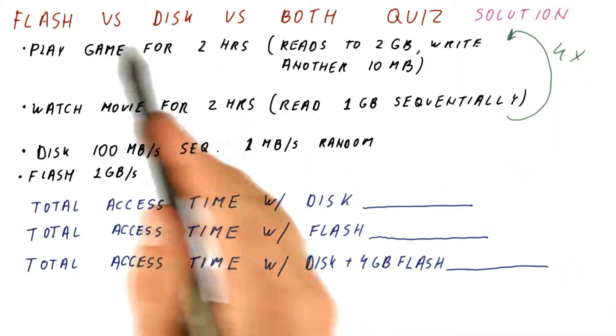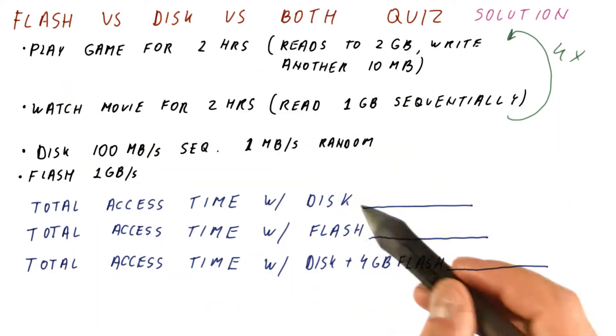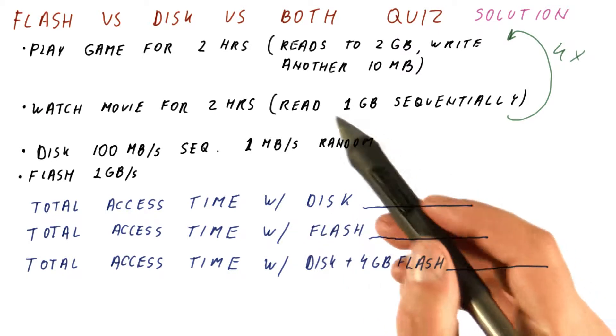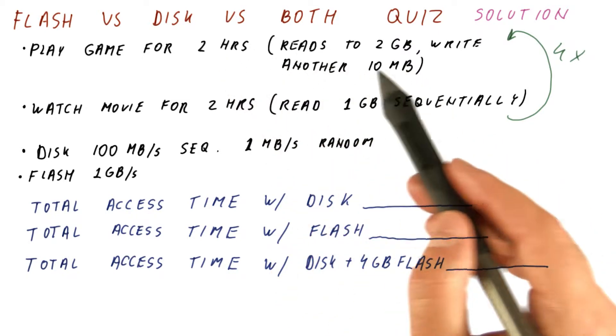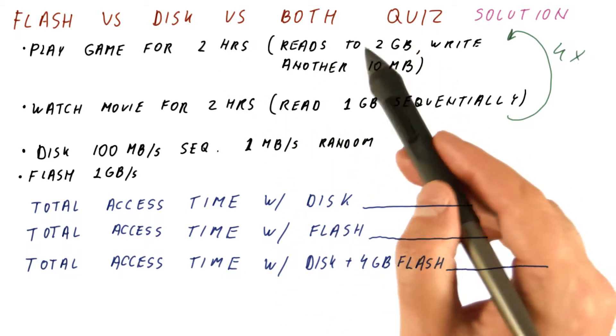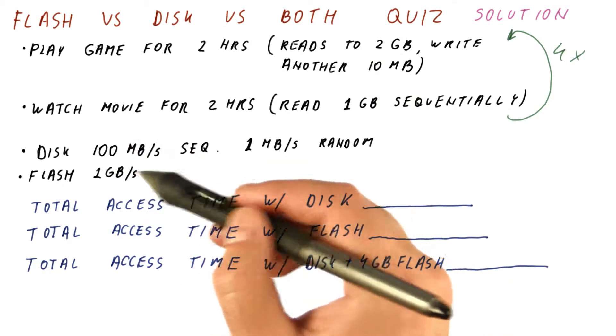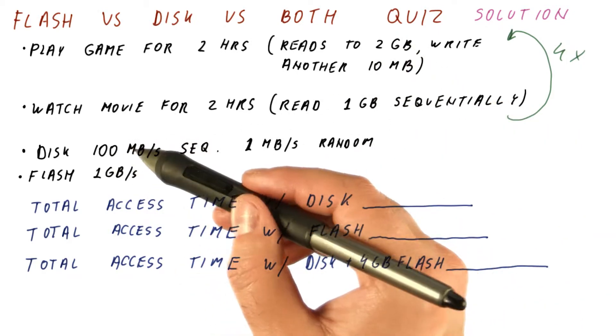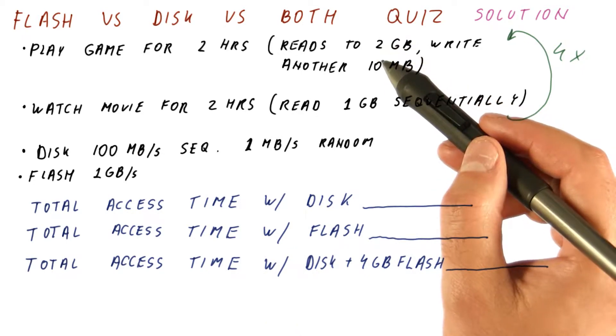Let's look at the solution with our storage comparison quiz. The total access time with the disk will be when we play a game, we will read 2 gigabytes at 100 megabytes a second. So we will spend 20 seconds reading these 2 gigabytes.